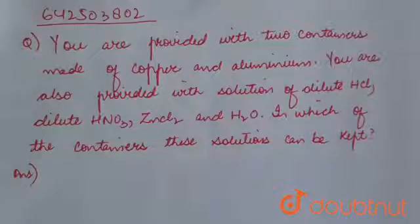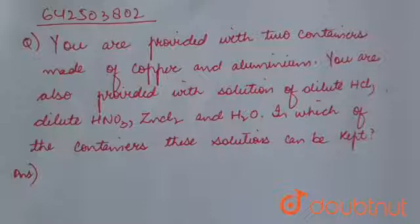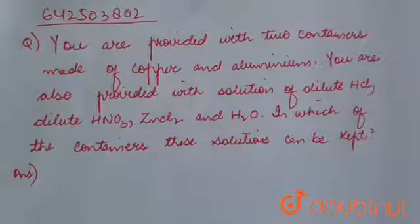You are provided with two containers made of copper and aluminium. You are also provided with the solutions of dilute HCl, dilute HNO₃, ZnCl₂, and H₂O. In which of the containers can these solutions be kept?